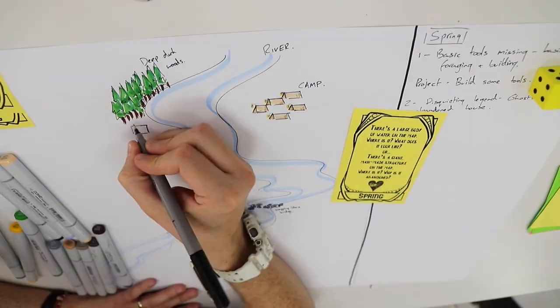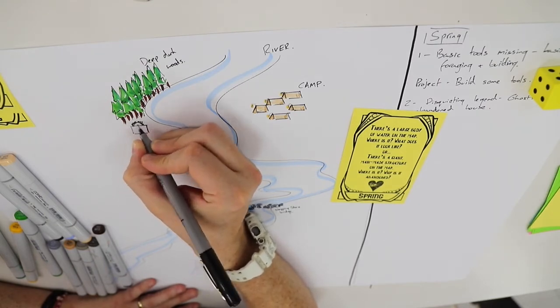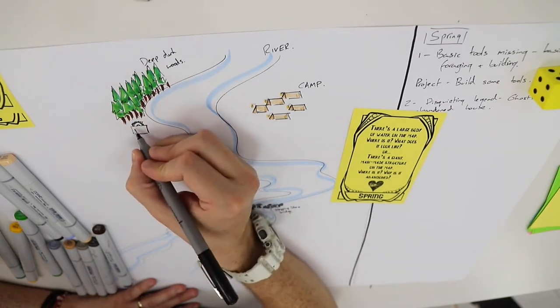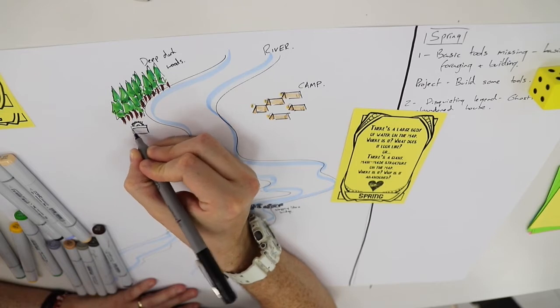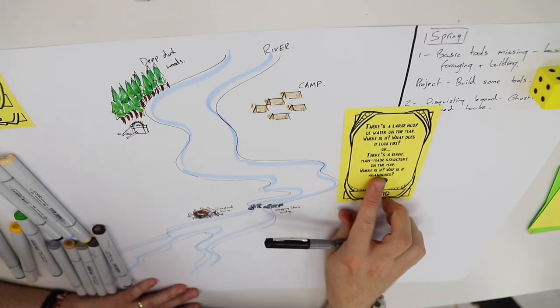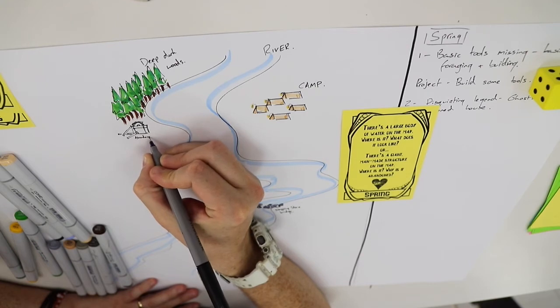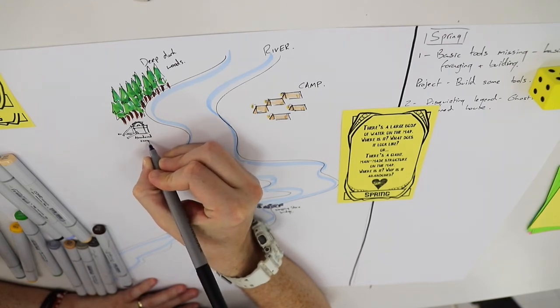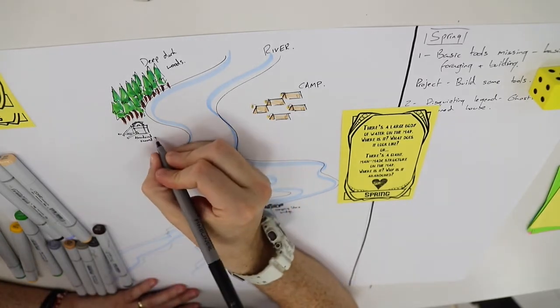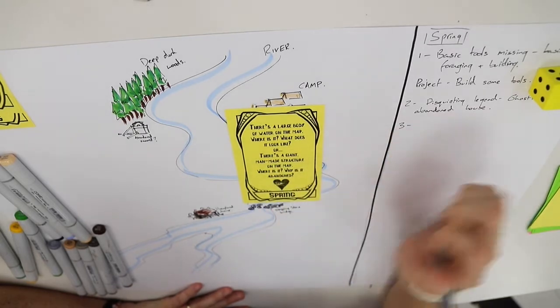However, there is a giant man-made structure on the map - where is it and why is it abandoned? A sawmill. You have to think the worlds that you're making here don't necessarily have to be rooted within what we have available to us - they can be based within a fantasy setting, you can set those kinds of limitations to it. So what is it, where is it and why is it abandoned? We have our abandoned sawmill. Why is it abandoned? Well maybe that's the mystery and they're not sure, which could then prompt a project.